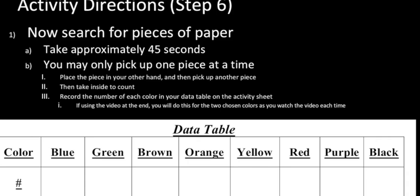As you search for the pieces of paper, some will stand out much more easily because they're not well adapted to their environment, while others — because of their color variation — will blend in better and be better suited to survive. Take approximately 45 seconds to search, picking up one piece at a time. Once time is up, collect them into a cup or bag, take them inside to count, and record in your data table.